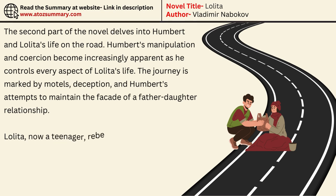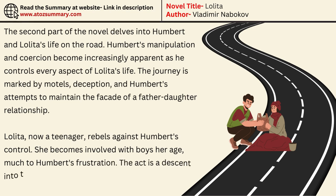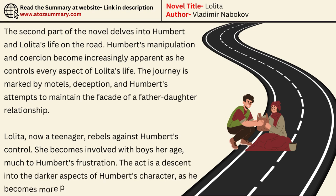Lolita, now a teenager, rebels against Humbert's control. She becomes involved with boys her age, much to Humbert's frustration. The act is a descent into the darker aspects of Humbert's character, as he becomes more possessive and controlling.